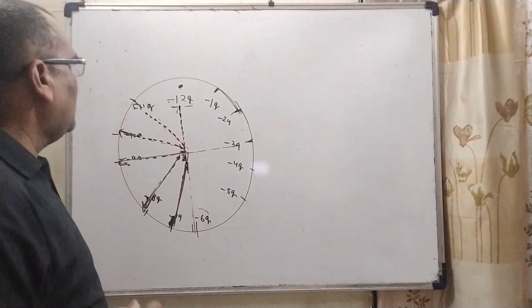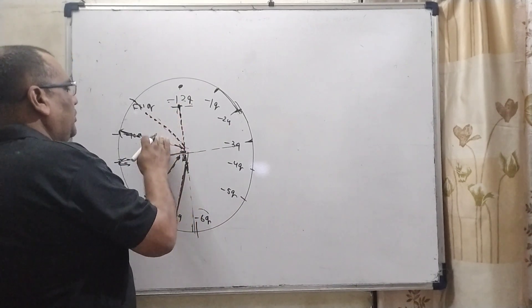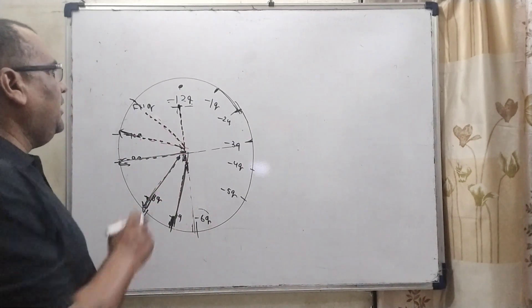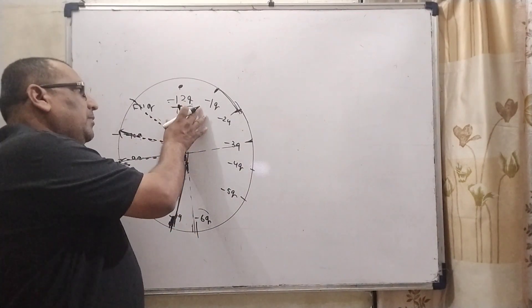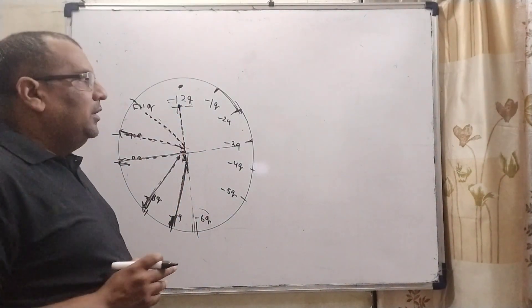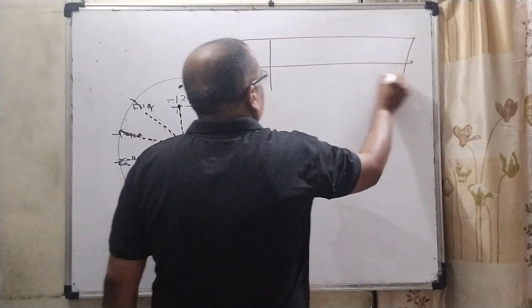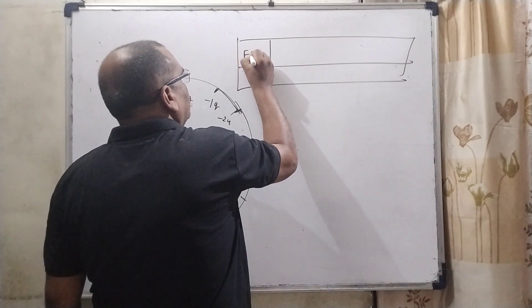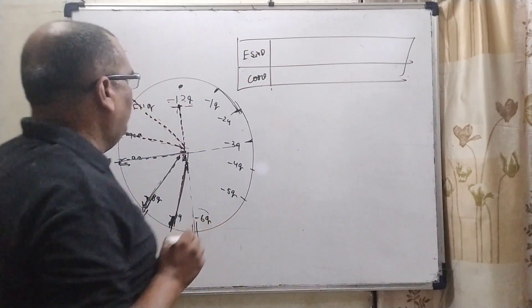Now each electric field, suppose E1, E2, E3, E4, E5 and E6. Here net electric field divided into components, sine components and cosine components. Let us plot here blocks, here sine component and here cosine component. One by one.